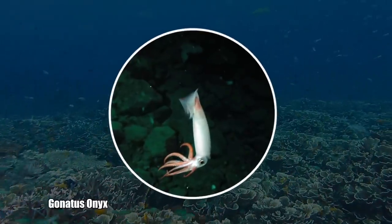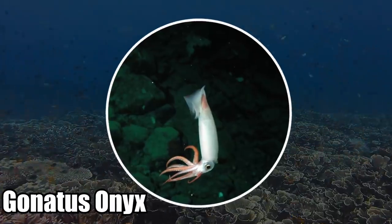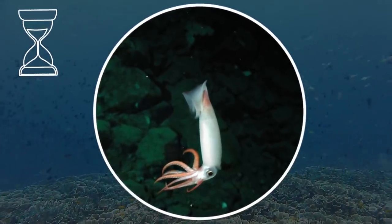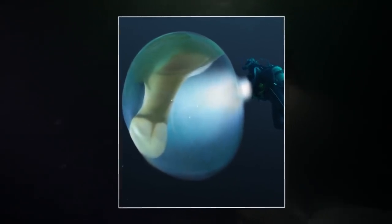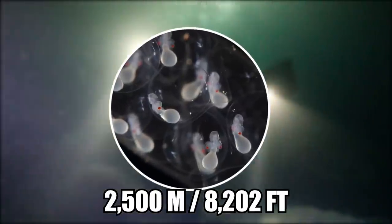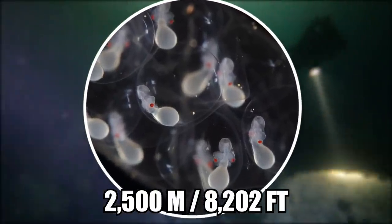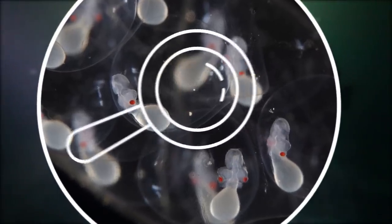Other types of squids, such as Gonatus onyx, carry around 3,000 developing embryos around for up to 9 months. Scientists had never seen this squid's reproductive habits until recently. While this squid is very common, it dives down 2,500 meters to lay eggs. It is the first squid observed to do this.